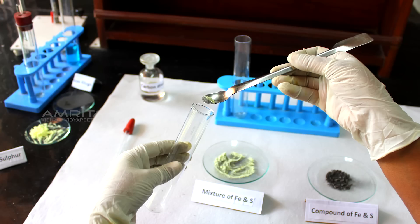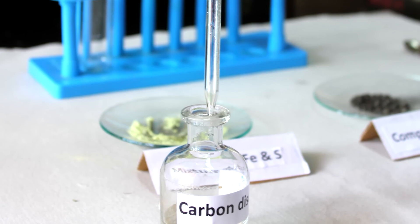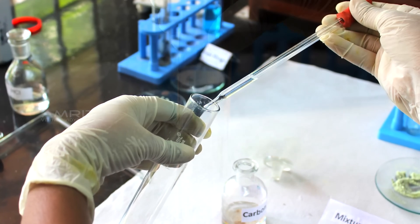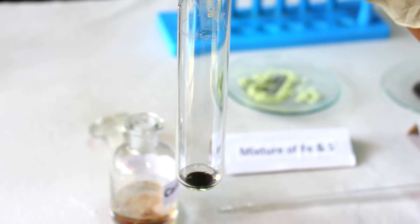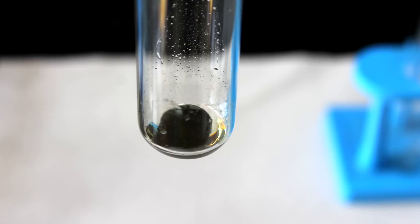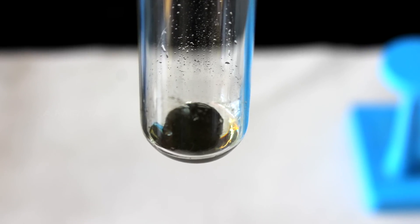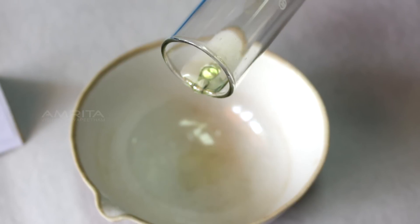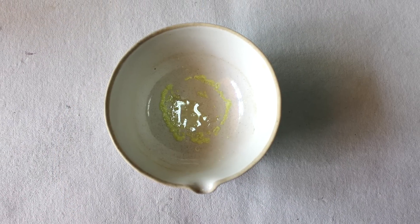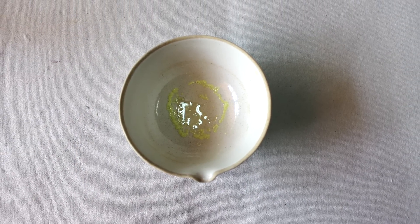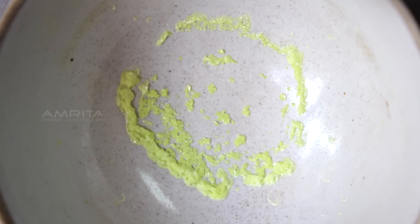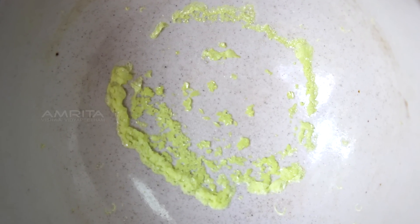Transfer a small quantity of mixture to a clean boiling tube using a spatula and add a few drops of carbon disulphide into this boiling tube. Here, sulphur dissolves in carbon disulphide and forms a yellow coloured solution. Now, decant this yellow coloured solution to the china dish. After some time, we can see that sulphur will reappear as yellow powder and this indicates that sulphur retains its property.